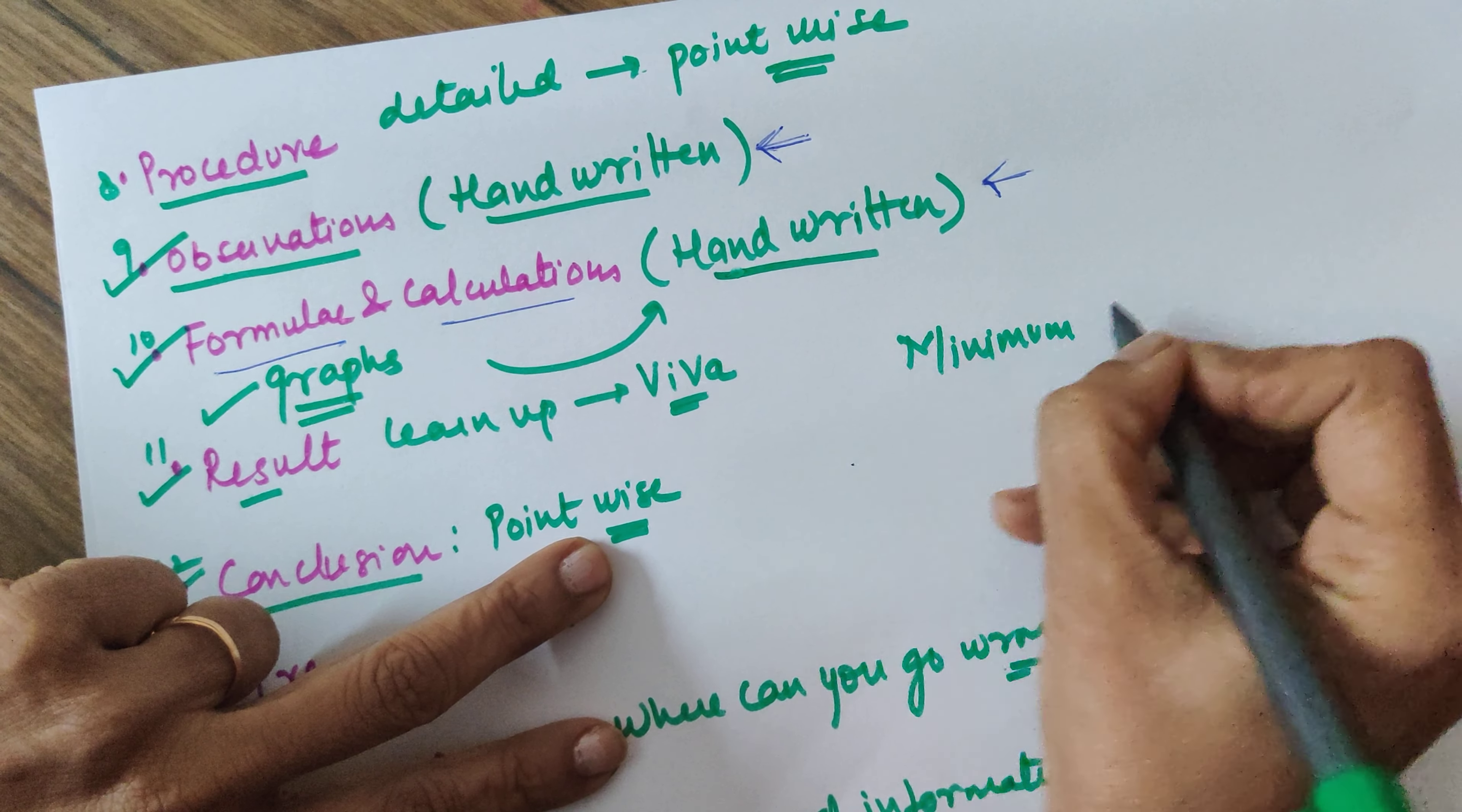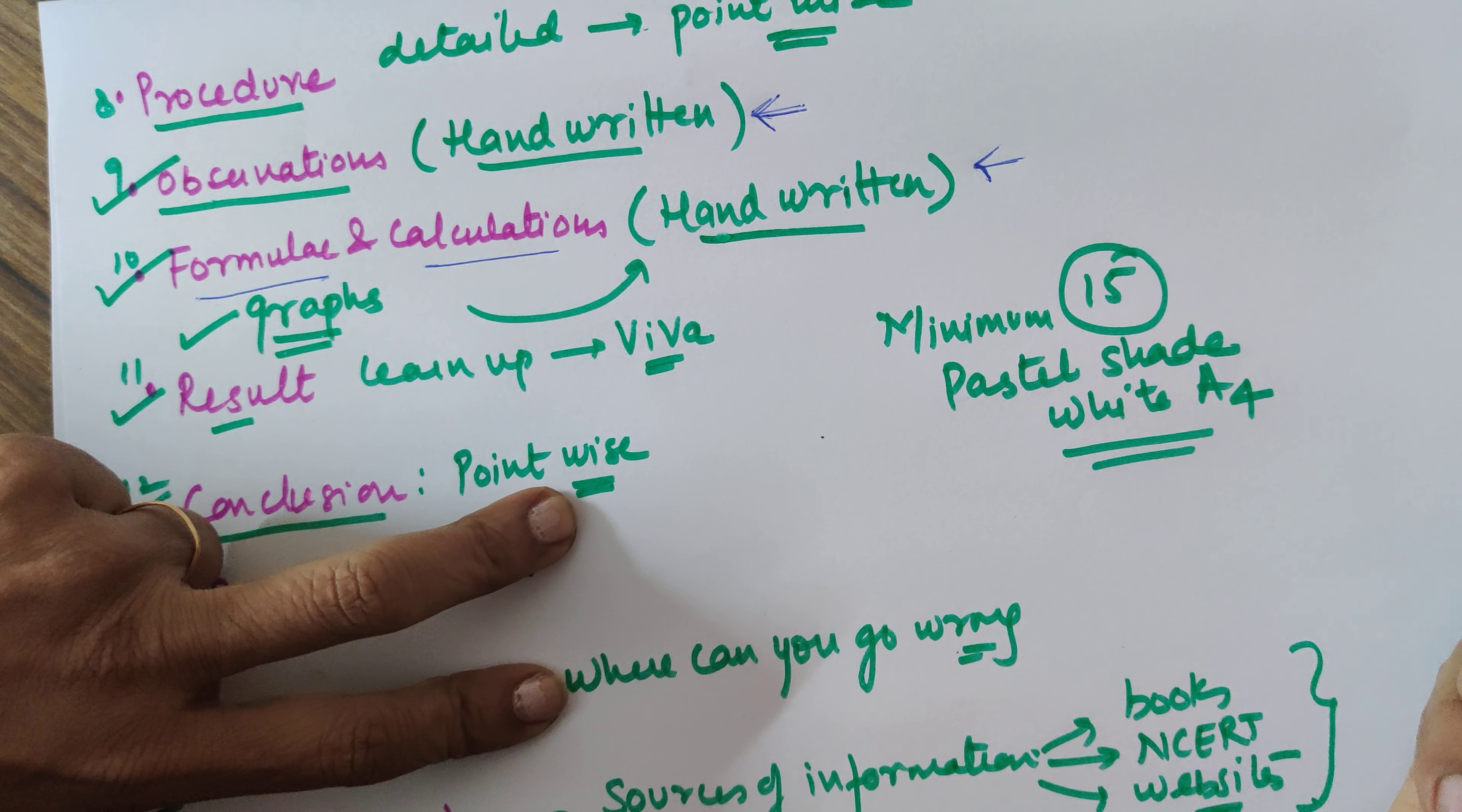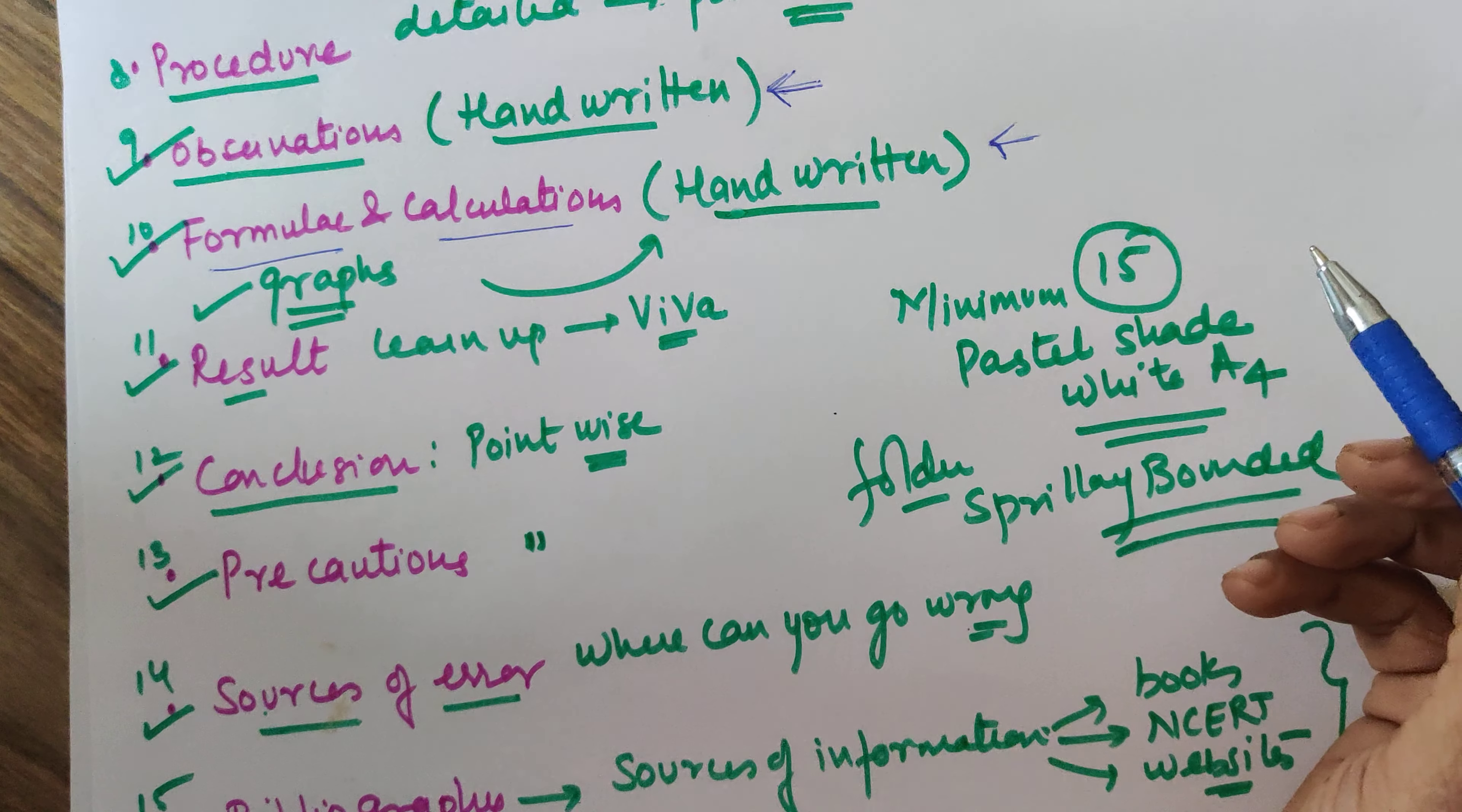Now which kind of sheet should you use? You can use a pastel shade sheet or you can also use a white A4 size page. That is up to you. You may or you may not. You can put it in a folder or you can get it spirally bounded. That is up to you how do you want to go about it for presentation's sake. But at least a minimum of these 15 sheets are a requirement of your investigatory project.